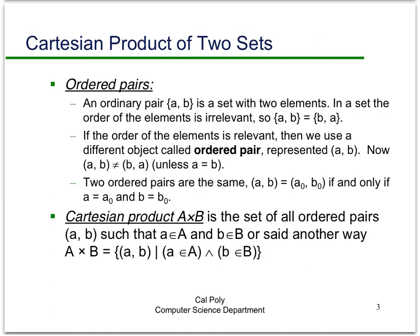A very important operator takes two sets. It's called the Cartesian product. It takes two sets and creates a brand new set, and it looks at a set of what are called ordered pairs. So first I need to tell you what an ordered pair is.